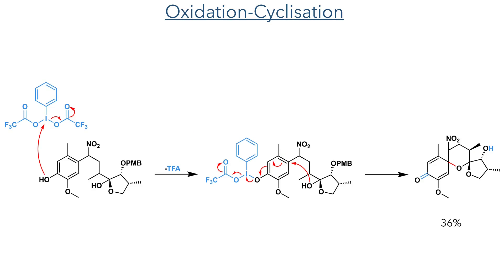In the next step, the compound was reacted with bis-trifluoroacetoxy-iodobenzene. This is first attacked by the phenolic hydroxyl group, eliminating trifluoroacetate and forming a new oxygen-iodine bond. This activates the aromatic ring towards nucleophilic attack by the hydroxyl group of the acetal, which attacks at the position para to the activating group, forming a six-membered ring in a 36% yield, accompanied by deprotection of the PMB group. This nucleophilic addition can occur from either face of the ring, forming a new chiral centre.